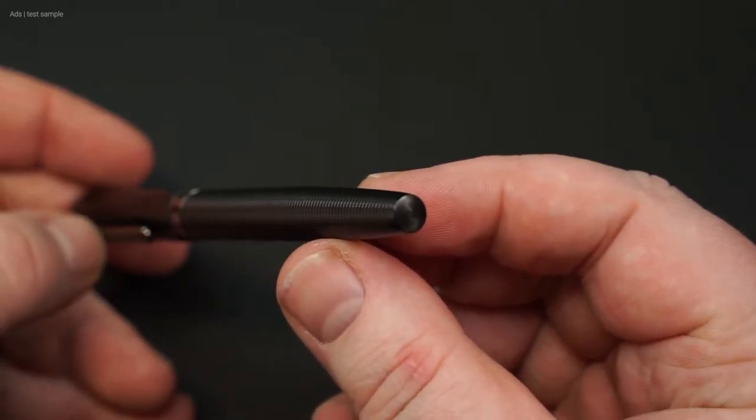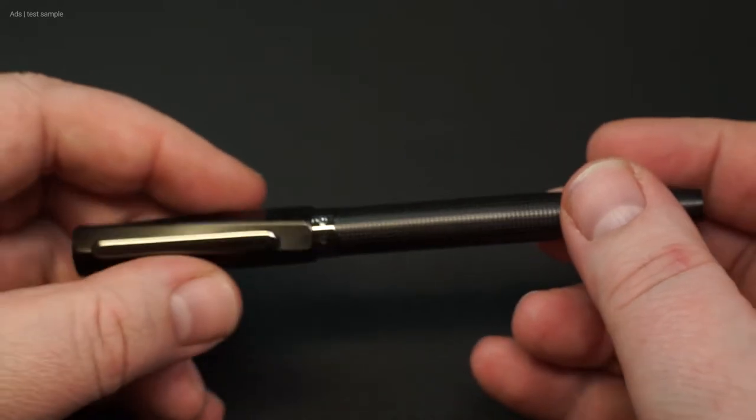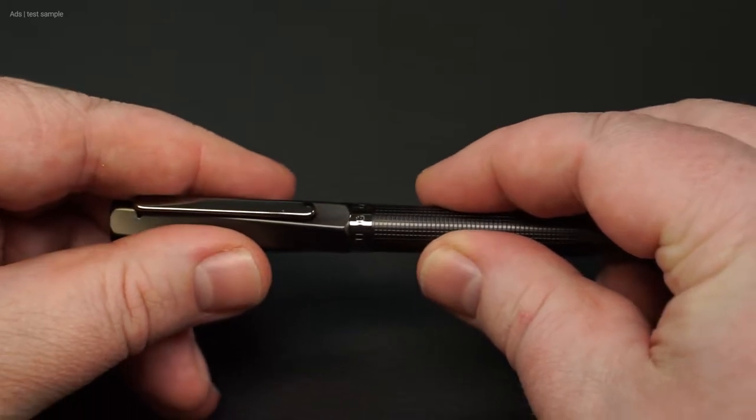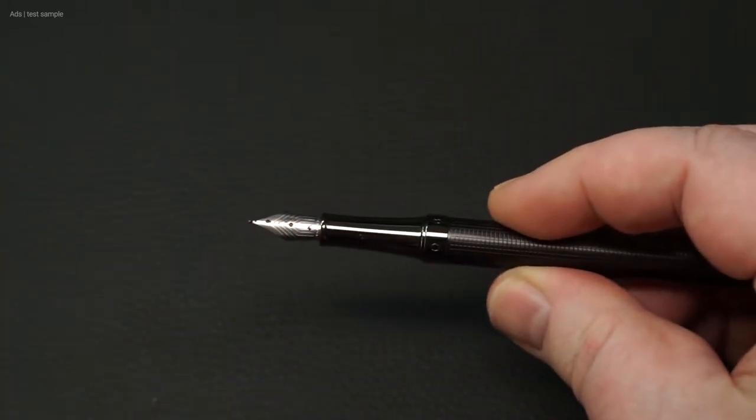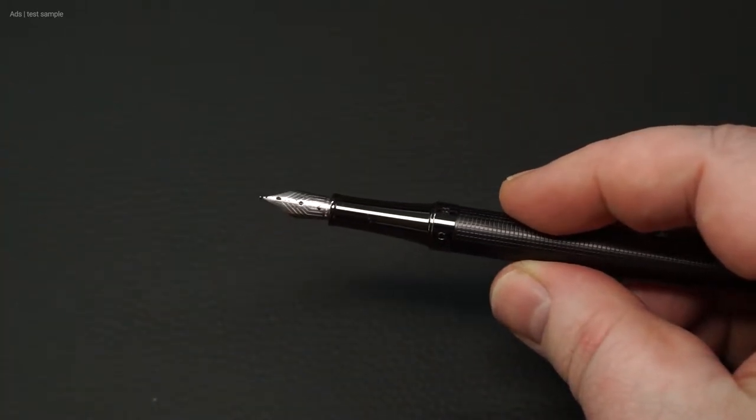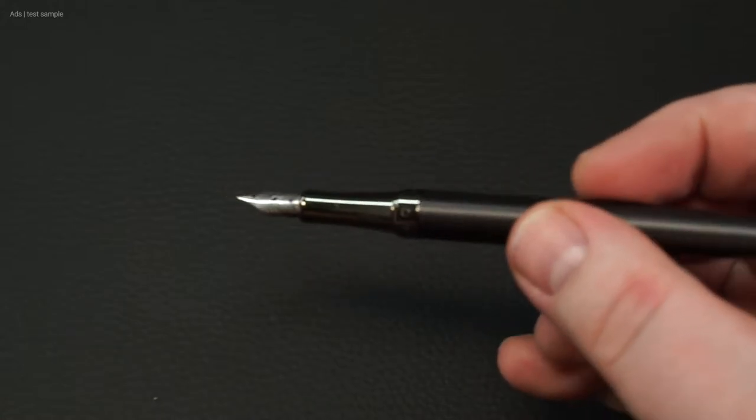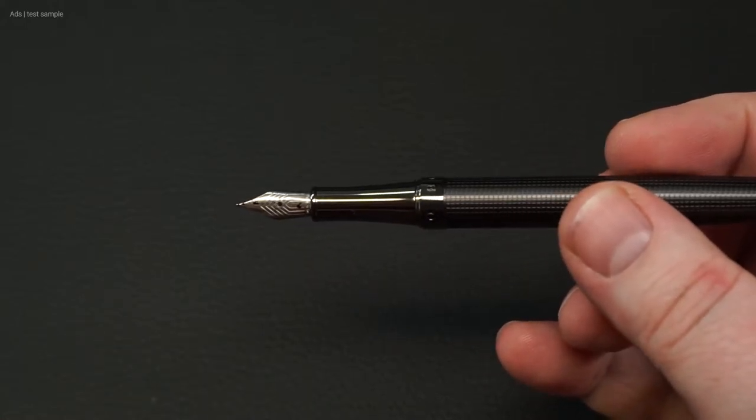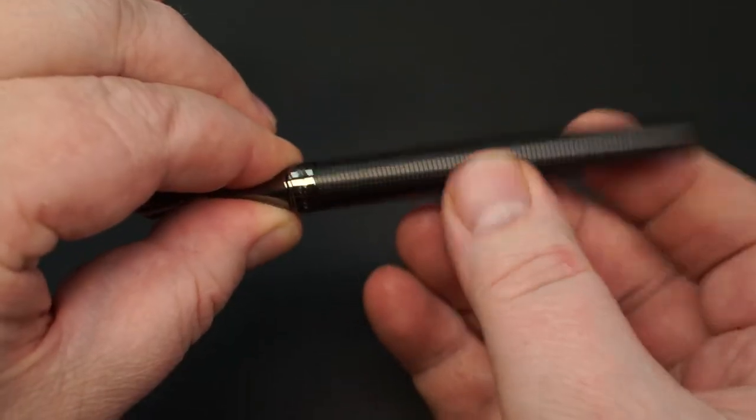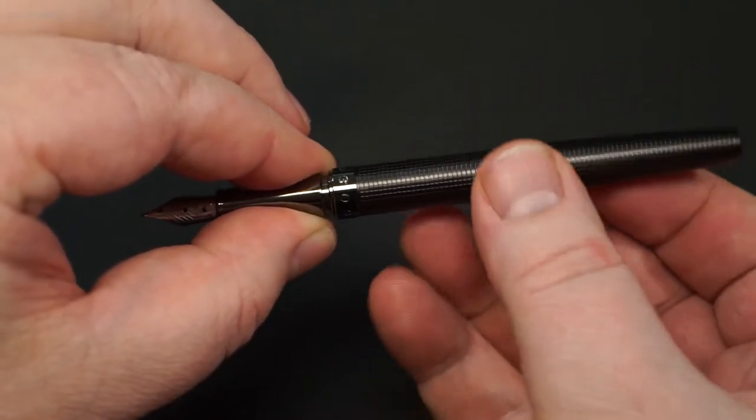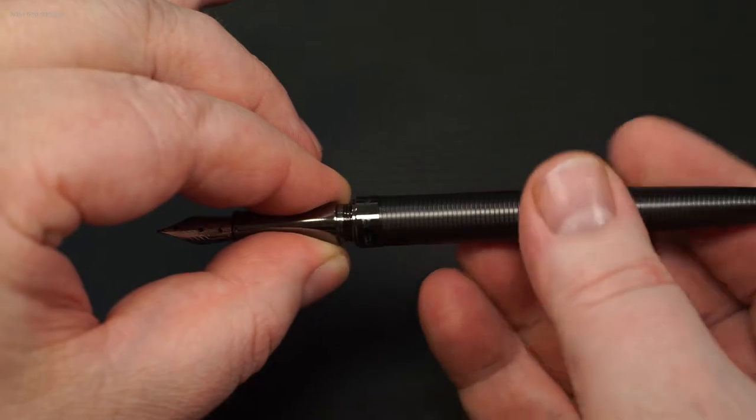Under the cap, we have a high gloss decorative ring engraved with Hugo Boss lettering. Underneath the cap, we have a metal grip piece and a sleek nib that is typical of Hugo Boss. While the fountain pen only comes with a standard cartridge, I have added a converter to it here.